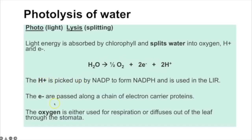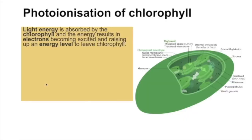The protons are picked up by NADP to form reduced NADP, or NADPH, which is then used in the light-independent reaction. The electrons are passed along a chain of electron carriers. The oxygen is either used in respiration or, if not needed, diffuses out through the stomata. We'll go through in more detail what happens to the protons and electrons when we get to chemiosmosis.